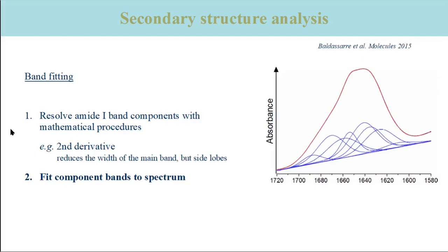In Step 2, component bands are placed at the identified band positions and the absorbance spectrum is fit. The band positions may or may not be allowed to vary during the fit. This provides the final positions, widths, areas, and shapes of the component bands. An example of such a fit is shown on the right-hand side.